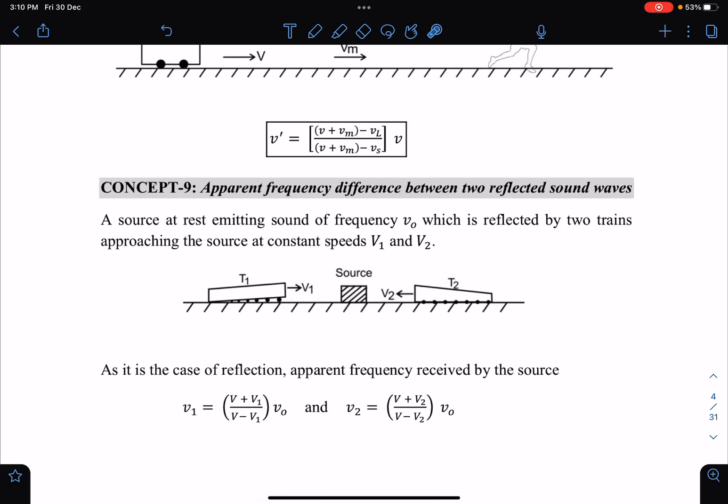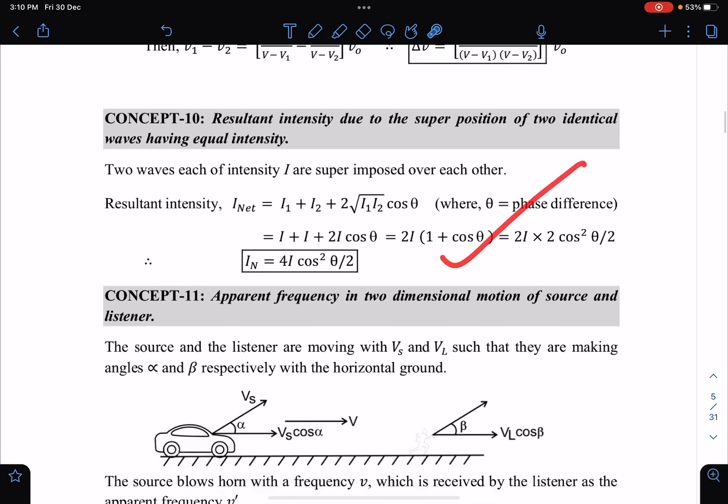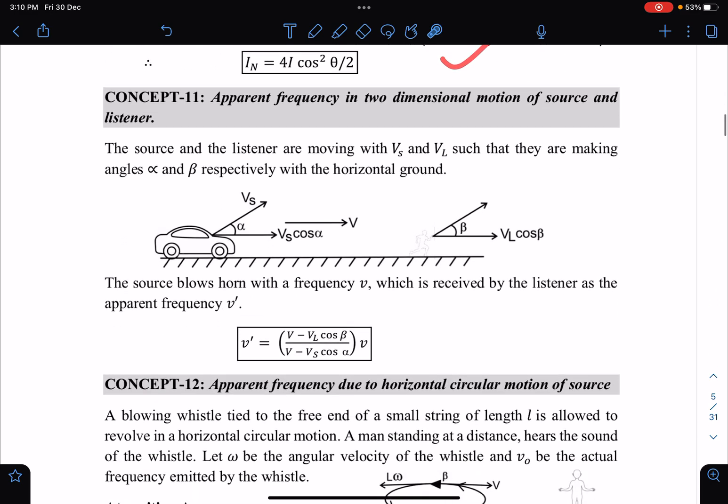Apparent frequency difference or beat frequency between two reflected sound wave pulses. Here you can see the formula they have derived and the method. Resultant intensity due to superposition in two-dimensional motion of source and observer, how to apply the Doppler effect.